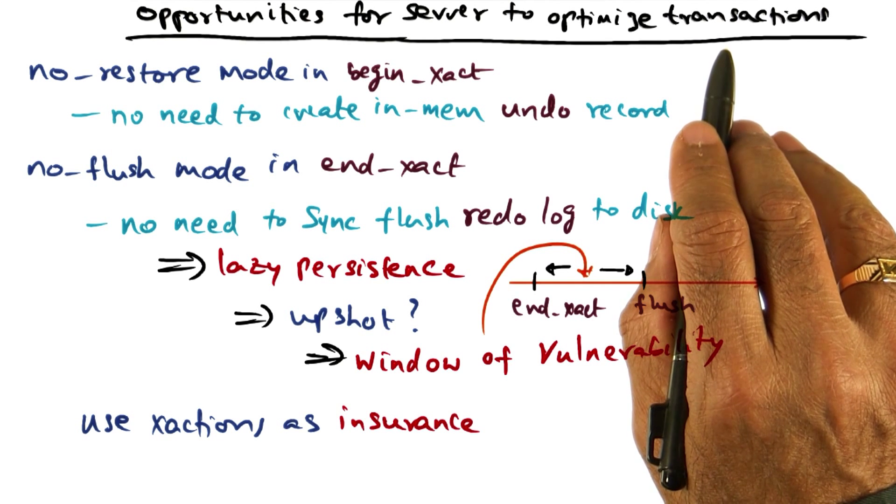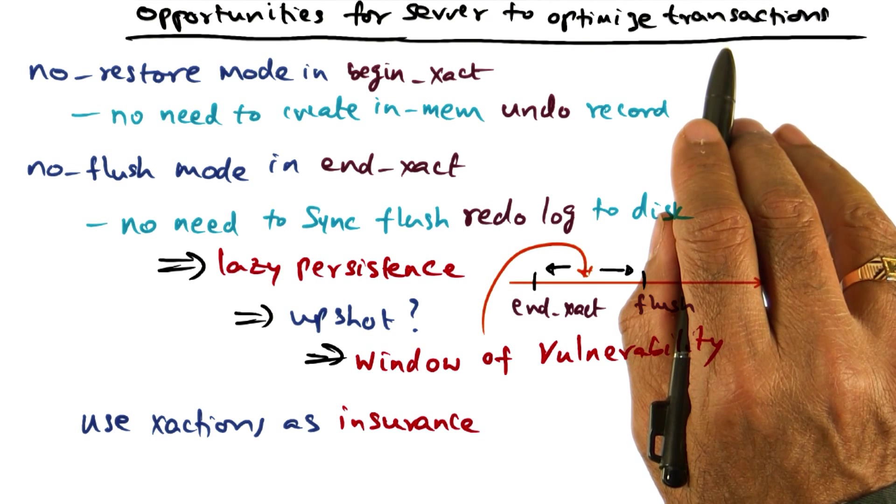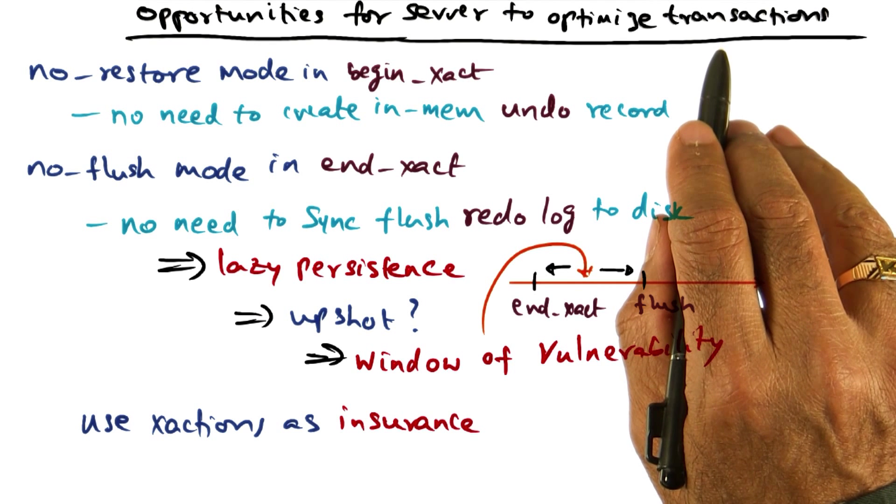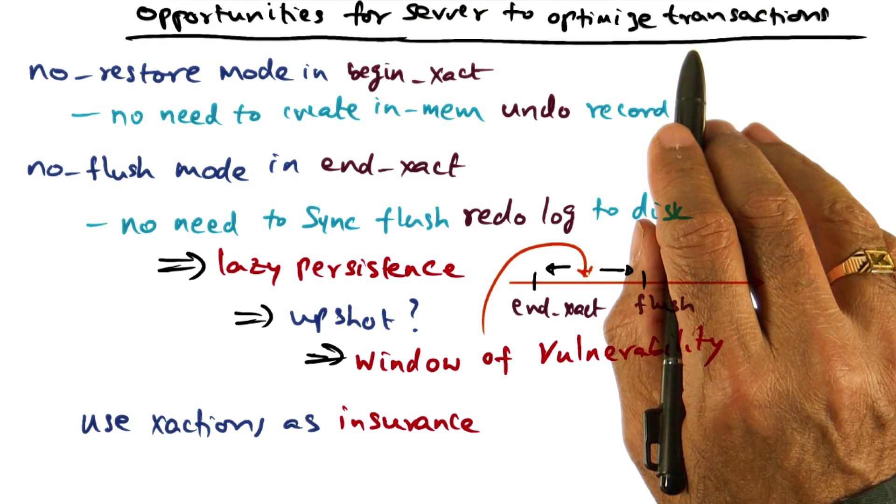And similarly, transaction by its very nature says that it has an all or nothing property. So if the transaction is not going to commit, that is it is going to abort, then we have to make sure that all the changes that have been made between begin transaction and abort transaction are thrown away.